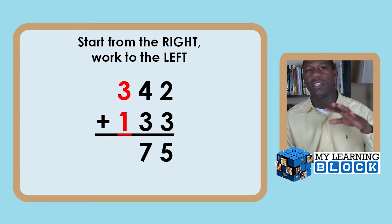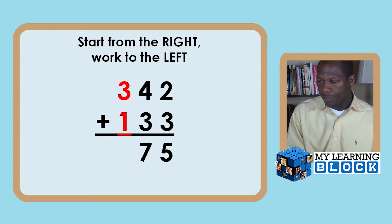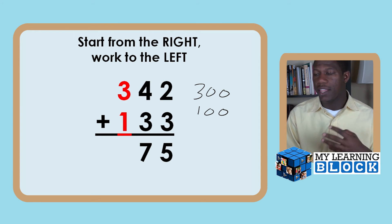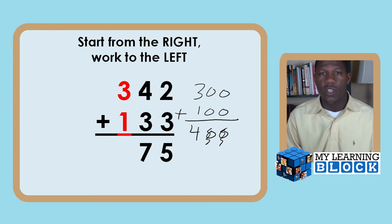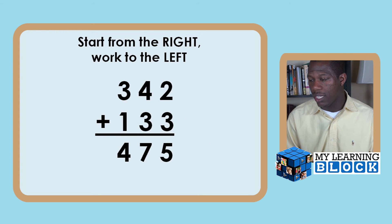Lastly we're going to focus in this hundreds place. This is not just three plus one. This is actually 300 plus 100 and the answer would be 400. But we already have our five in the ones, our seven in the tens, and we just bring this four over here. So the answer you get finally is 475.